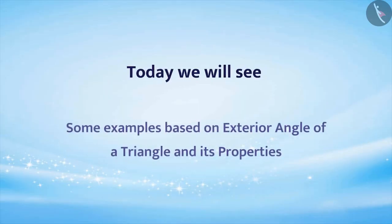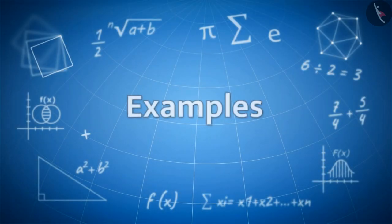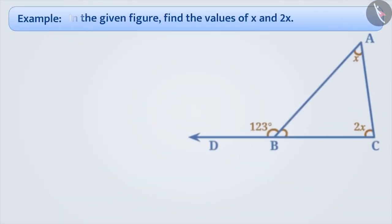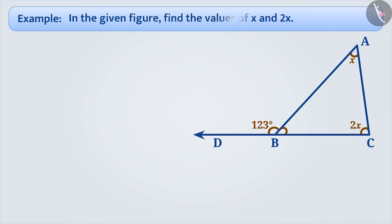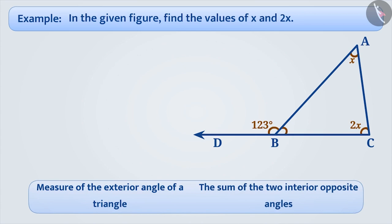Today we will see some examples based on the exterior angle property of a triangle. Find the values of x and 2x in the given figure. The exterior angle property of a triangle tells us that the measure of an exterior angle of a triangle is equal to the sum of the measures of its interior opposite angles. Can we solve the given question based on this understanding? Think for a while.